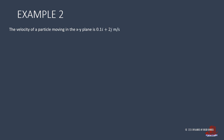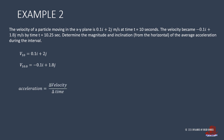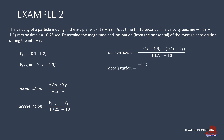With a similar example, we check what happens when there is a change in time. Using the same approach, we take the average acceleration as delta v over delta t. Plugging in the terms, we come up with negative 0.2i minus 0.2j all upon 0.25, which is then simplified as negative 0.8i minus 0.8j.